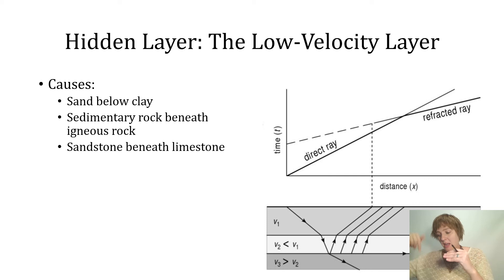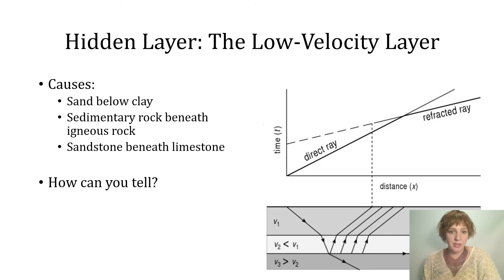In most cases, luckily, you do have layers with faster seismic velocities as you go downwards, but occasionally the low velocity layer may appear. You might ask how you can tell. Well, if all you had was the geophysical data, you couldn't be able to do that. The low velocity layer is completely invisible.